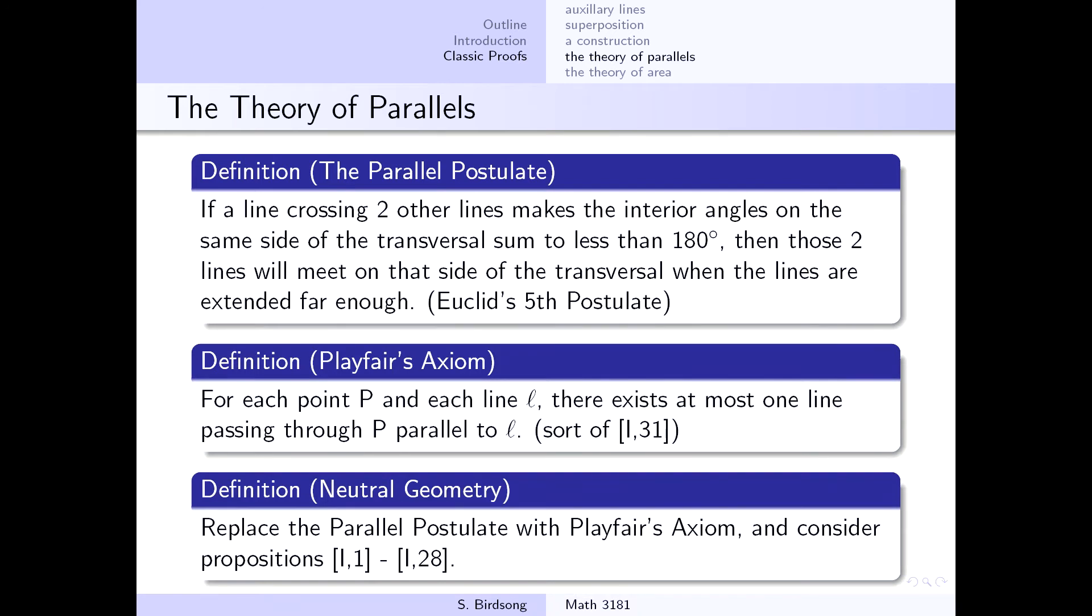Propositions 1 through 28 only. So you're going to cut off after Proposition 28 in Euclid's first book, and you're going to take the first four postulates,